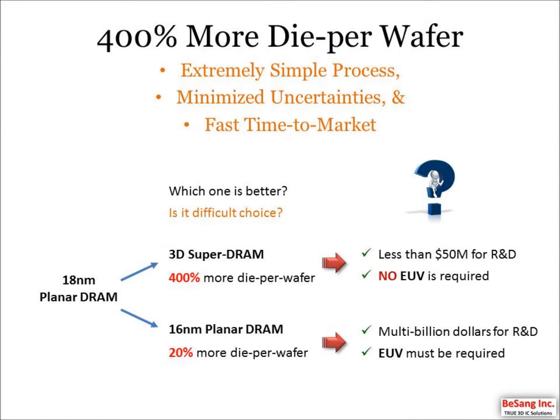Here is a summary. 3D Super DRAM enables 400% more dies per wafer with a simple process, minimized uncertainties, and fast time to market. If you consider Planar DRAM shrinking from 18nm to 16nm, then 20% more dies per wafer could be achieved, but multi-billion dollars must be invested for R&D and EUV would be required. In the case of 3D Super DRAM, less than $50 million is needed for R&D and no EUV is needed, yet it could produce 400% more dies per wafer. So which one is better? It is a simple choice. Thank you for watching and feel free to let us know your comments.